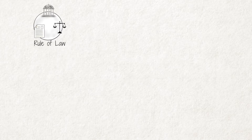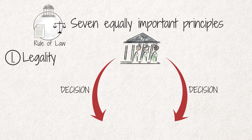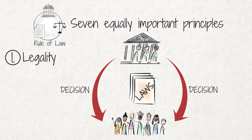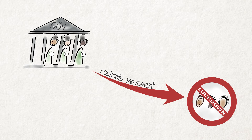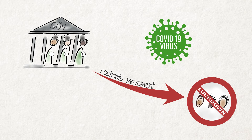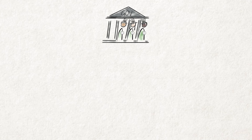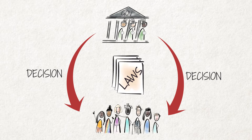The Rule of Law contains seven equally important principles. Principle 1 is the principle of legality. This means that whenever the government takes a decision that impacts one or more of us, it must be authorized by a specific provision in the law. For example, when the government restricts our movements in order to combat a global pandemic like COVID-19, this must be based on a provision in a law, namely the Disaster Management Act. This is really important because it means that government officials may not just wake up and take measures that affect us. There must be a law that allows them to do so.